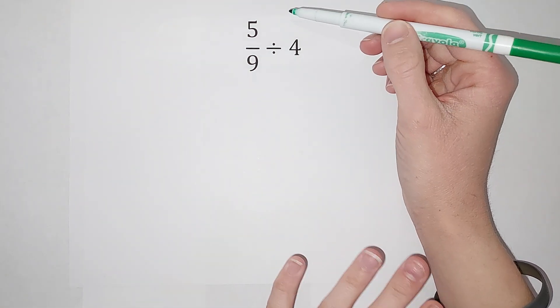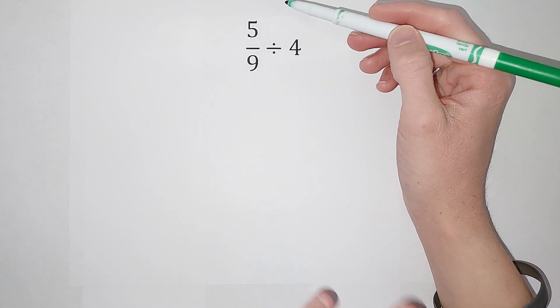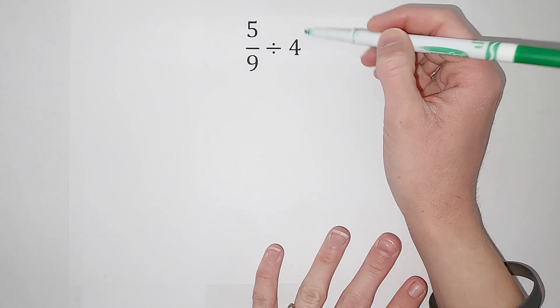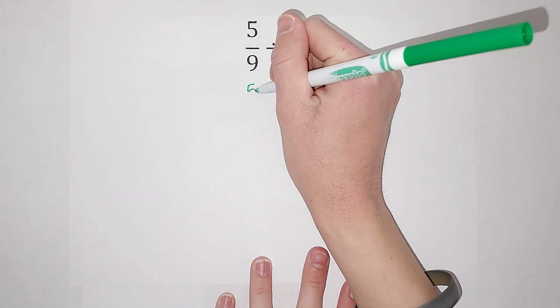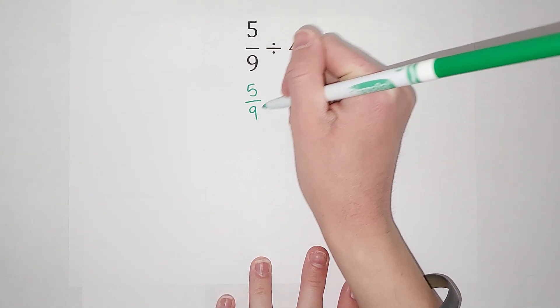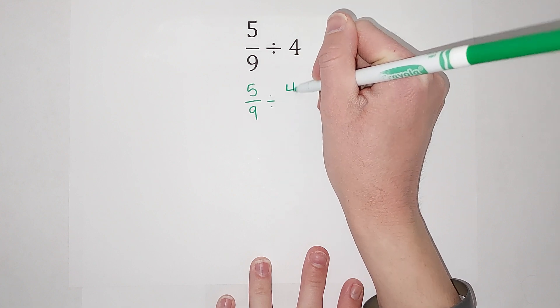So when I divide these, what I do is I first want to think of four as a fraction. So the fraction of four, if something doesn't look like a fraction, it's just over one, right? Four over one.